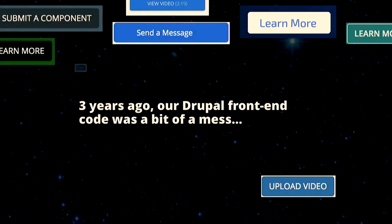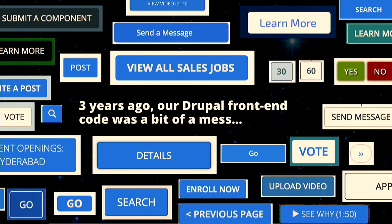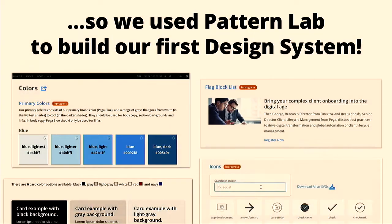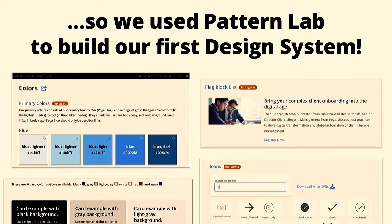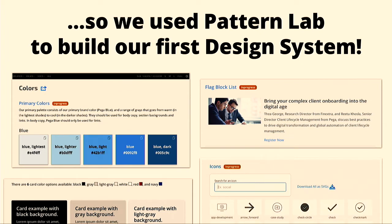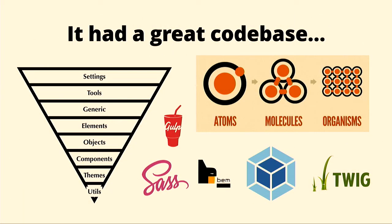When I first came to Pega three years ago, the front-end code on our Drupal sites wasn't great. So, like many teams large and small, we used some of the best tools and techniques out there — tools like Pattern Lab to build our very first Drupal-friendly design system. And you know what? It was pretty good. We implemented tons of best practices for the time, things like inline SVG icons and asynchronous font loading.